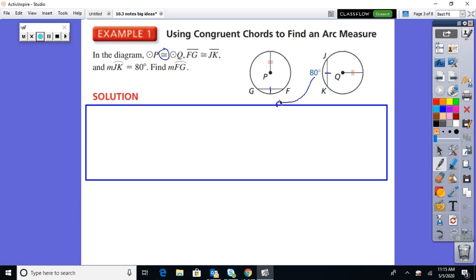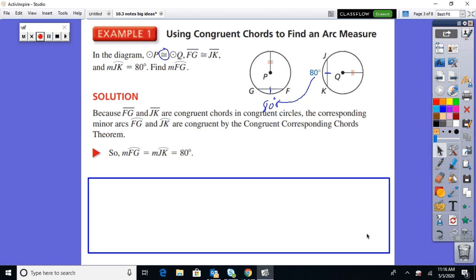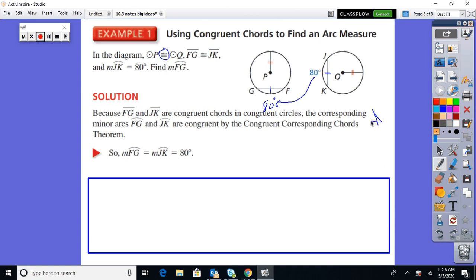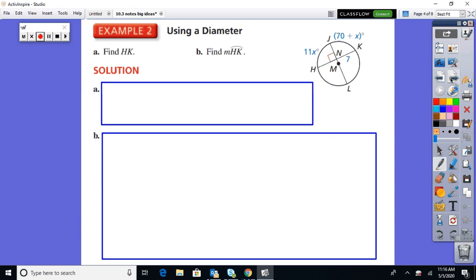So if that is 80, then GF or FG will be 80. Simple, simple, simple. You don't really have to write all that down if you don't want to, but it's there for you from our textbook.